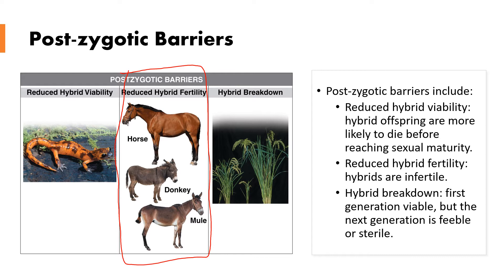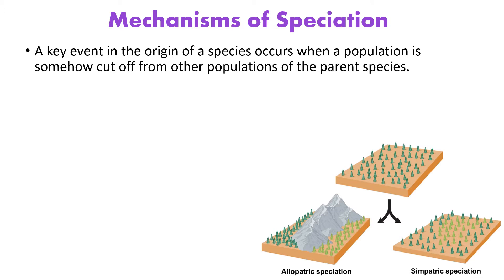The last postzygotic type is hybrid breakdown, where you actually have a viable, fertile offspring from two different species in the first generation, but then the second or third generation becomes feeble or sterile. A plant example illustrates this — the first two generations may be fine, but by the third generation you have a very feeble or sterile plant.